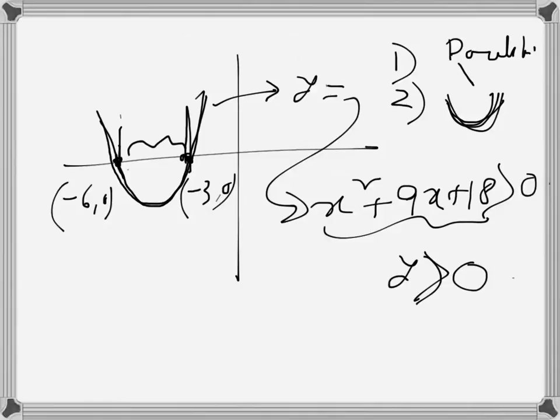...definitely y is less than 0 because it is going negative. So from -6 to -3, y is negative. We have to get where y is positive - that means this part, this whole part.